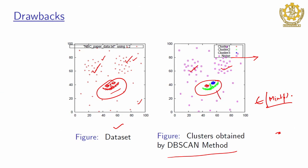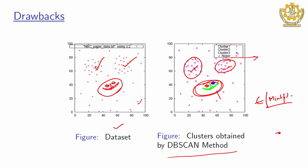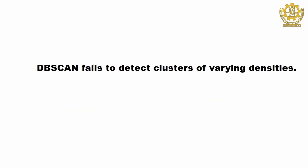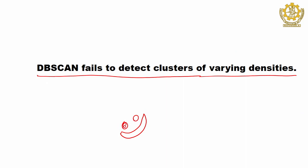Either it finds three clusters, or some points will be considered noisy and others will form two clusters while another forms a single cluster. Why is this happening? Because, as you can see from the dataset, the density of this region varies heavily compared to the third region and also varies heavily compared to the first and second regions. If the dataset has clusters with varying density, then DB scan cannot work. The major drawback of DB scan is that it fails to detect clusters of varying densities.